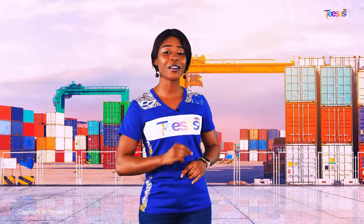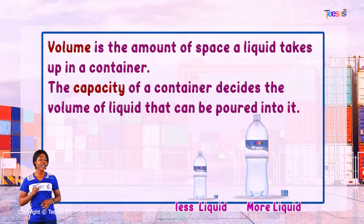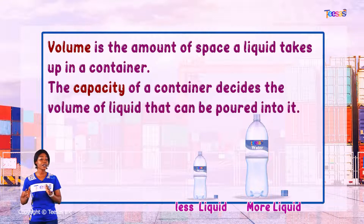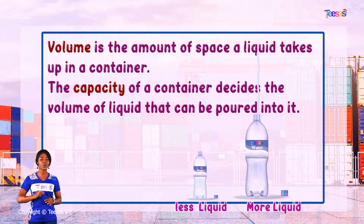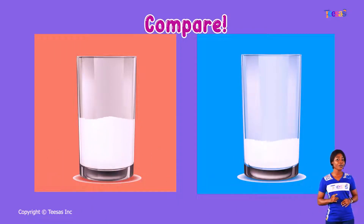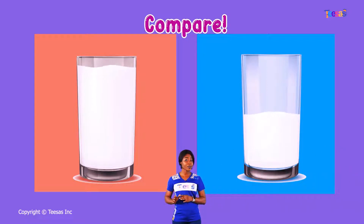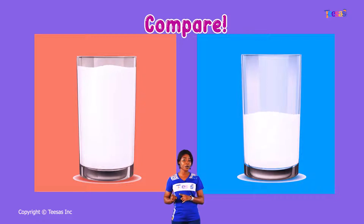Now, let's talk about volume. Volume is the amount of space a liquid takes up in a container. The capacity of a container decides the volume of liquid that can be poured into it. Think about that. Let's compare the volume of liquids in these two containers. You will notice that these cups have the same capacity, but the volume of water in this cup is more than the volume of water in that.